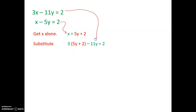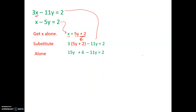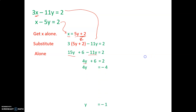Then I'm going to substitute that expression, 5y plus 2, into the other equation wherever I see an x. So here is the equation now, but wherever I see the x, I'm going to put in x's new name in parentheses. Now I work to get the y value alone. I distribute the 3 to get 15y plus 6 minus 11y equals 2. Combining like terms gives 4y plus 6 equals 2. Subtracting 6 from both sides and dividing by 4, I get y equals negative 1.